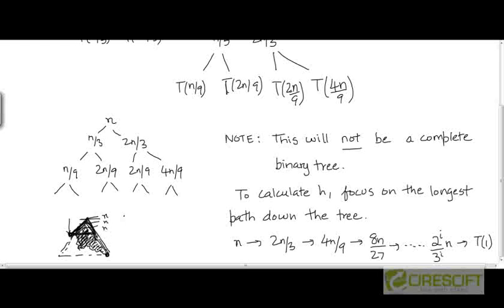Because we computed the height of this tree, the length of the longest path, which was log n to the base 3 by 2. And by assuming that this pattern would continue down the tree, it actually won't.